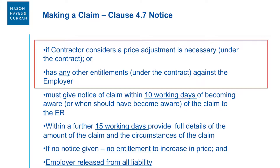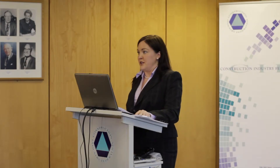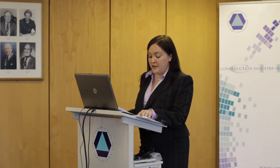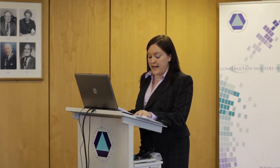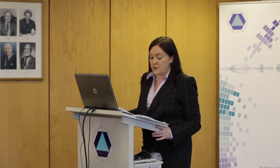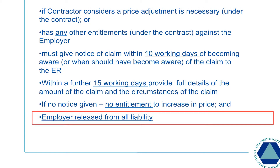If the contractor considers that under this contract there should be an adjustment of the price, or that it has any other entitlement against the employer under or in relation to this contract, the contractor must give the employer's representative notice of the claim within 10 working days of when the contractor became or should have become aware of it, and full details of the circumstances and the amount claimed within a further 15 working days after giving the notice.